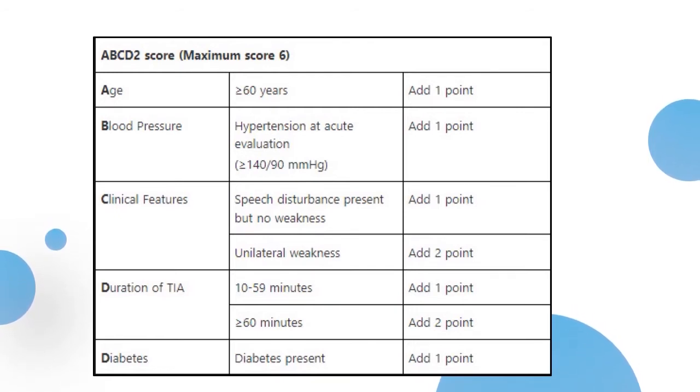If the age of the patient is more than or equal to 60 years, one point is added. And if there is hypertension at acute evaluation which is more than 140 by 90, one point is given.